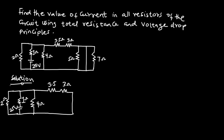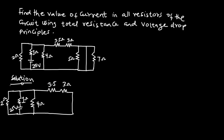You can see that the 3.5-ohm resistance and the 3-ohm resistor are in a series connection, so we can find an equivalent resistance for these two resistors. The equivalent resistance for the 3.5-ohm and 3-ohm resistors would be 3.5 plus 3, which equals 6.5 ohms. This means we can replace these two series resistors with a single 6.5-ohm resistor.